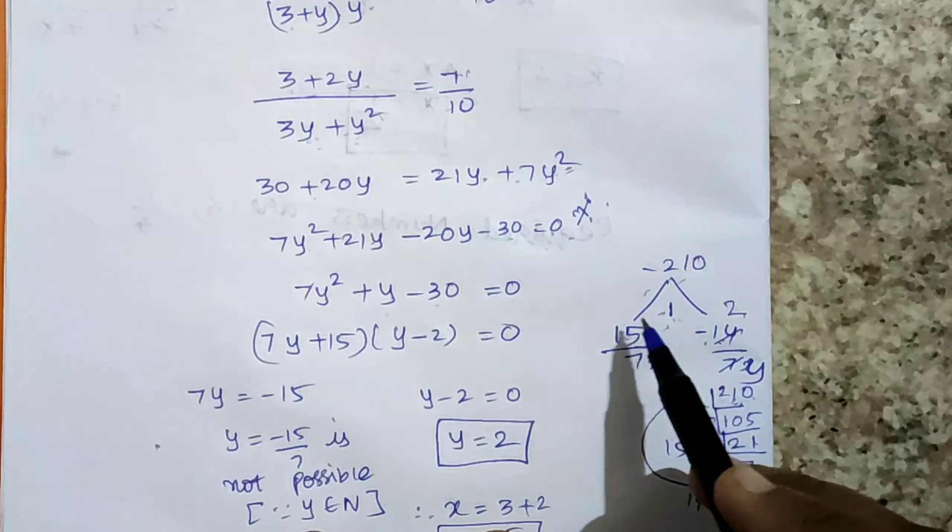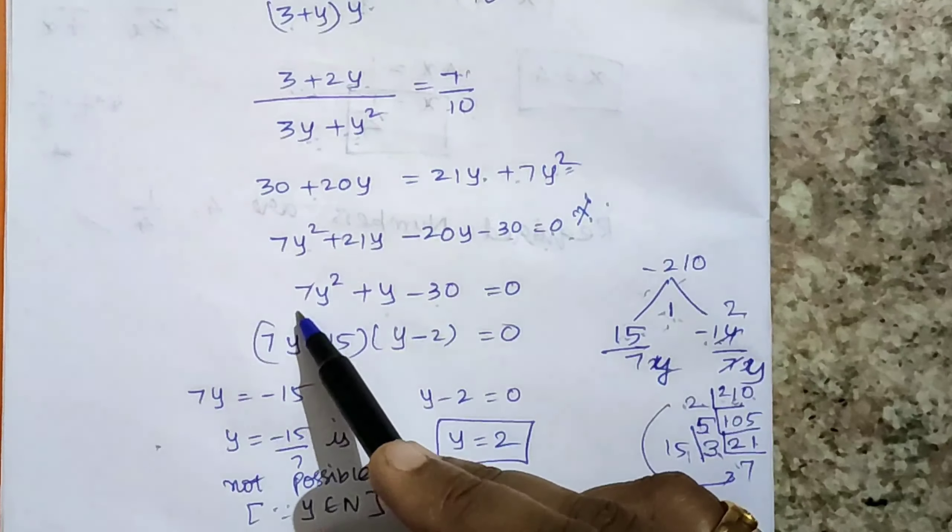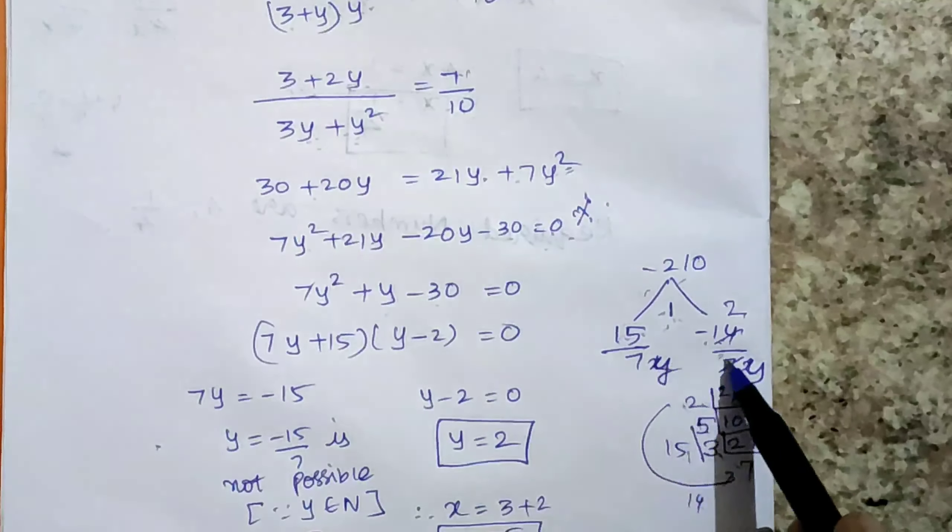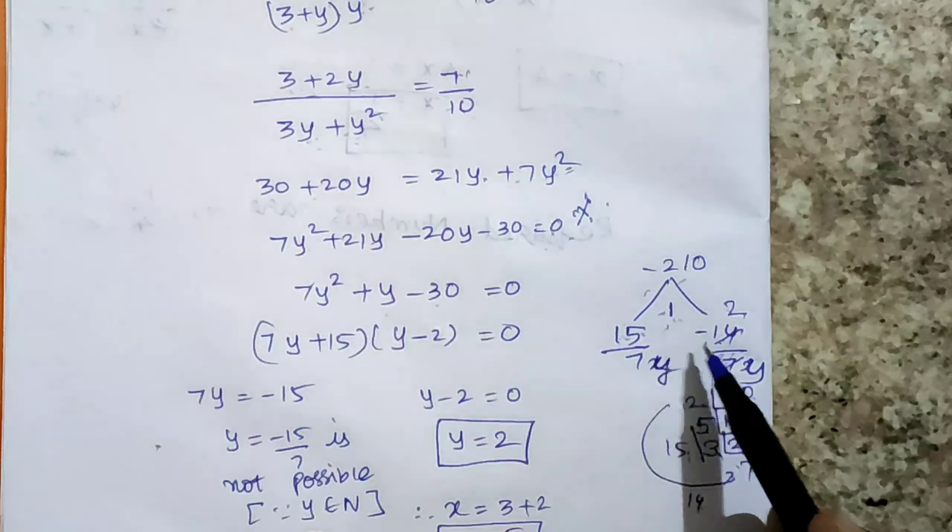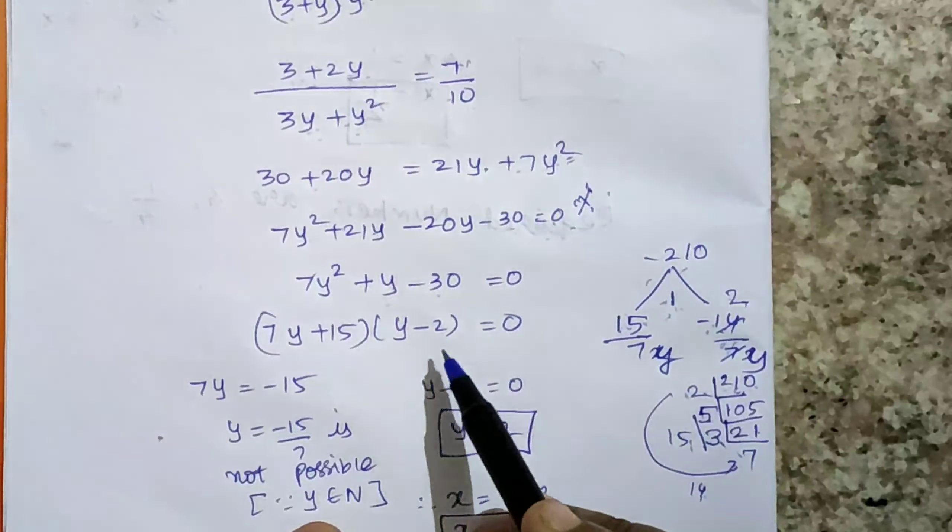Here the coefficient of y squared is 7, so divide by 7. 2 times 7 is 14. So (7y + 15)(y - 2) equals 0.